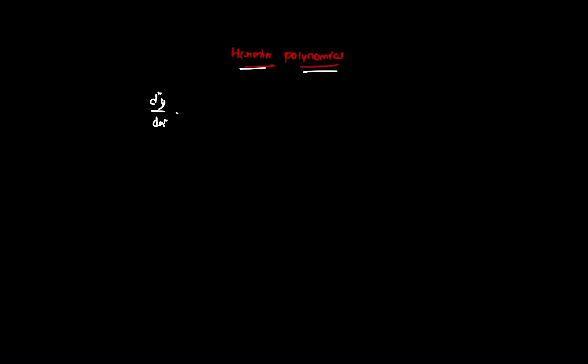For example, d²y/dx² minus 2x dy/dx plus 2λy, or 2ny, so d²y/dx² minus 2x dy/dx plus 2ny, let's say 2λy equal to 0. This is a typical second-order differential equation — what is the Hermite differential equation? This is called the Hermite differential equation.